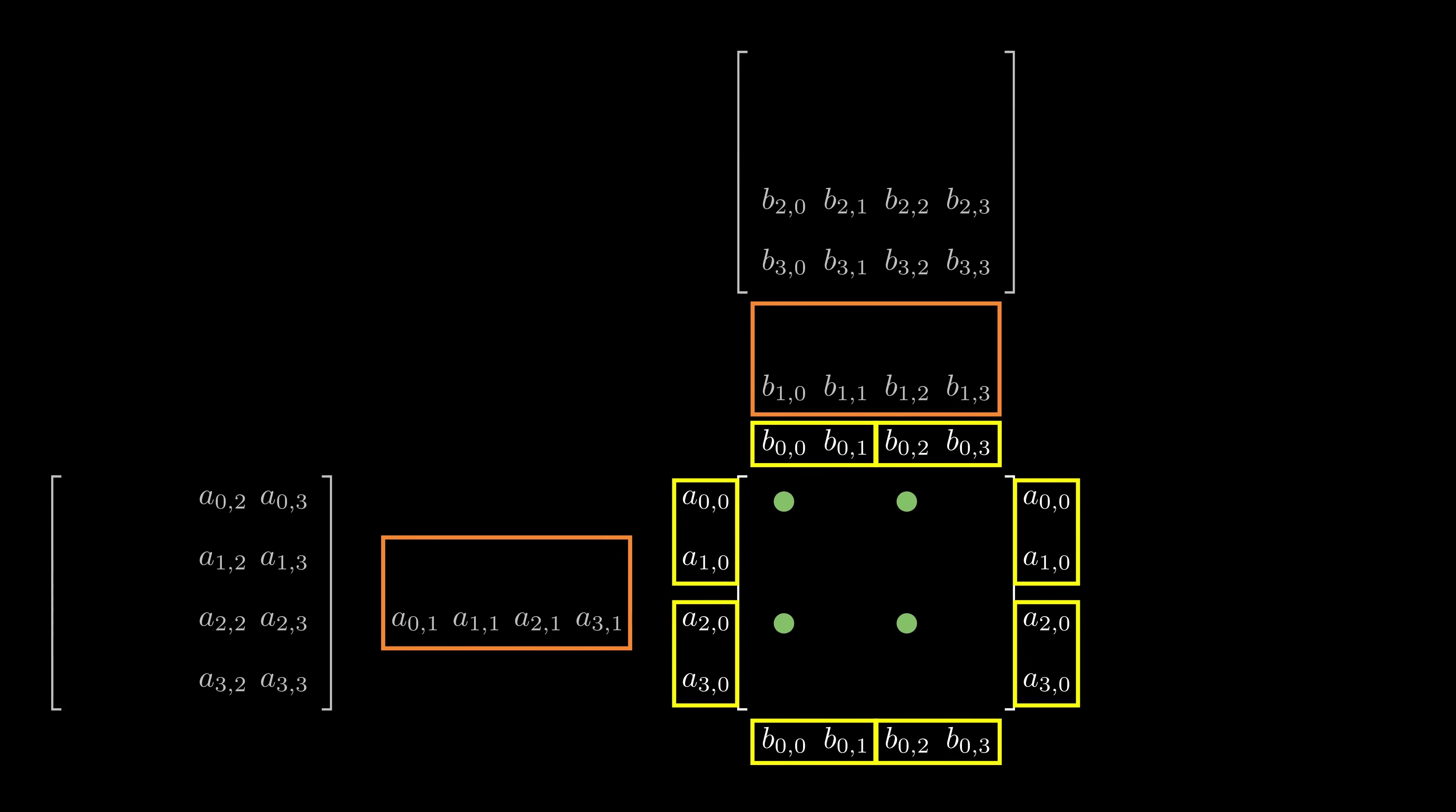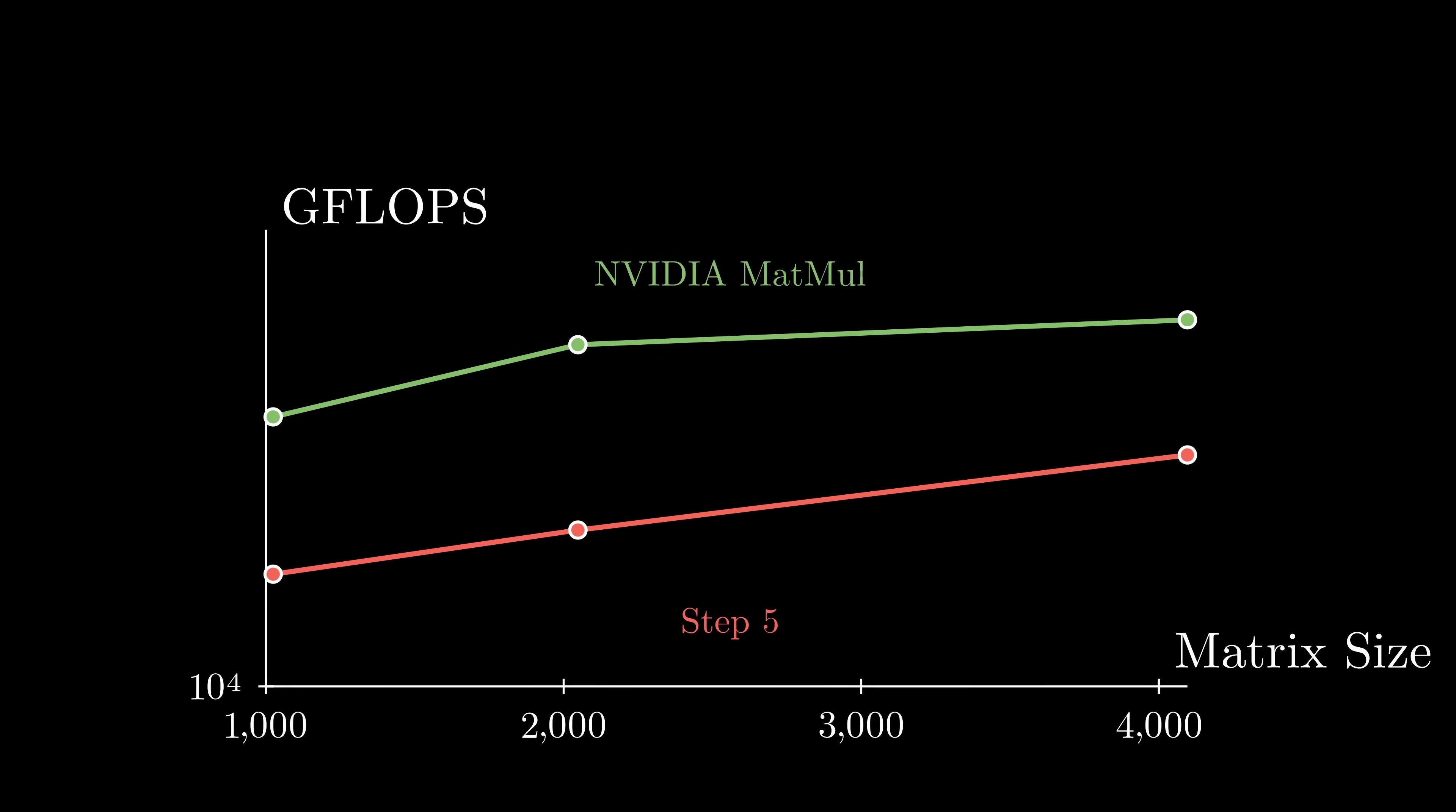I store the tile of A as a transpose to again use vectorization and move multiple elements at once into the registers. The same thing is done with the elements of B in the shared memory. Finally, the calculations are performed as usual and the same thing is repeated for all the other elements of input matrices. With vectorization, I got even closer to NVIDIA's implementation.